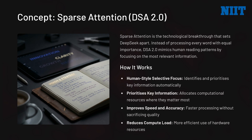Let me explain sparse attention in simple language. Sparse attention is the technological breakthrough that sets DeepSeek apart. Instead of processing every word with equal importance, DSA 2.0 mimics human reading patterns by focusing on the most relevant information. It works through human-style selective focus — prioritizing key information, improving speed and accuracy, and reducing compute load. In conclusion, AI doesn't treat every word as equally important; it focuses on key elements just like humans do.